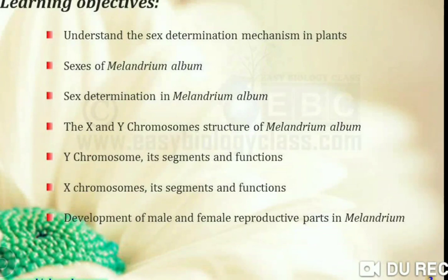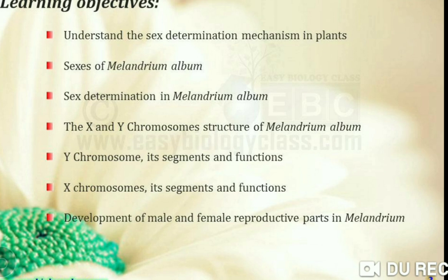Today's learning objectives are to understand the sex determination mechanism in plants. Our main topic is sex determination — what is the mechanism involved in a plant? Then, the sexes of Melandrium album. What is today's example? Melandrium album is a flowering plant. We will see the sex determination mechanism and sex determination in Melandrium album.